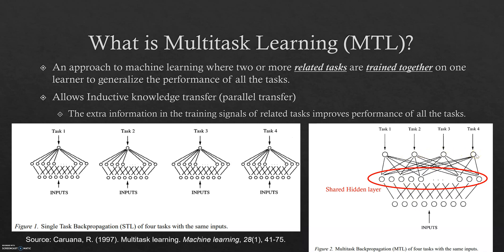When we train these four different related tasks together, what is actually happening is the parallel transfer of knowledge. All these output neurons are connected to the neurons in the hidden layer, so the domain knowledge of these tasks helps the other tasks learn better. In general, this helps improve the overall performance of all the tasks and also helps generalize the performance of the model.